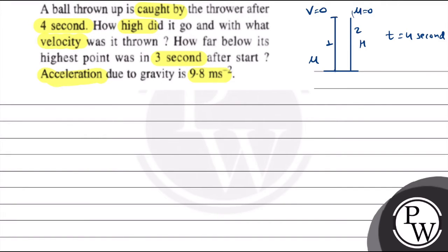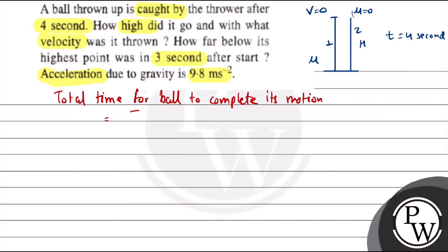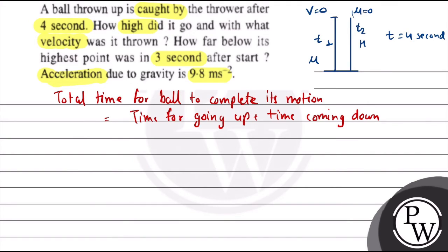So the total time to complete its motion equals time for going up plus time for coming down. Let's say time going up is T1 and time coming down is T2. So total time equals T1 plus T2.